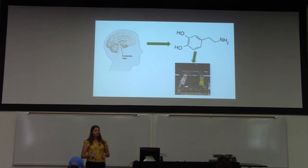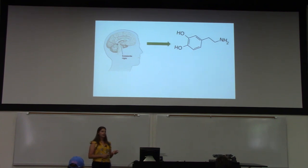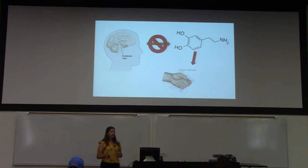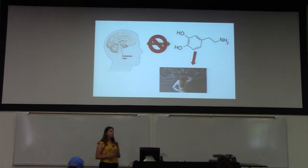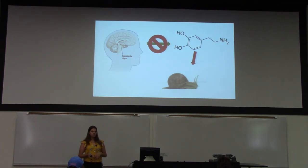But since Parkinson's is a neurodegenerative disease, the cells in the substantia nigra are dying. And when that happens, there's no more dopamine being created. And as you can imagine, that has detrimental effects, such as the characteristic hand tremor of Parkinson's, sleeplessness, confusion, and bradykinesia, which is slowness of movement.